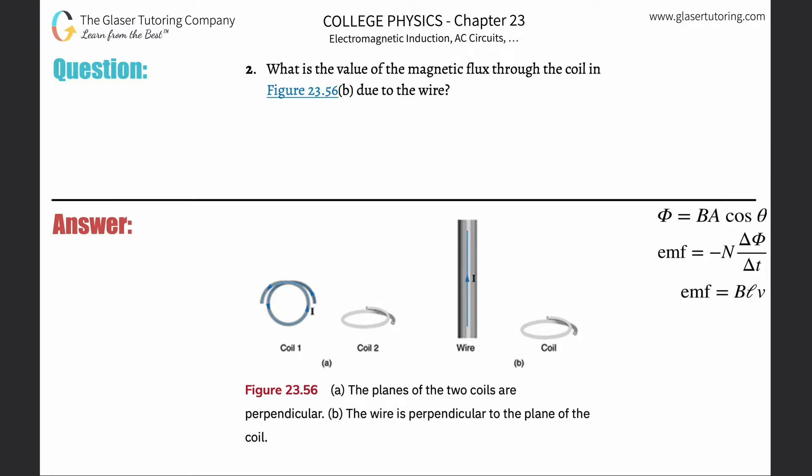Number two, what is the value of the magnetic flux through the coil in Figure 23.56B due to the wire? Please review number one, where I went through an analysis of how to think about magnetic flux.